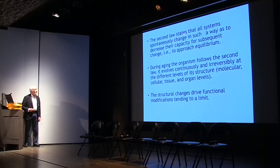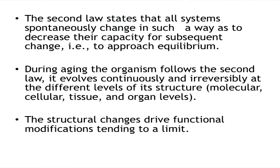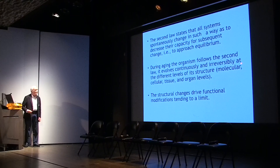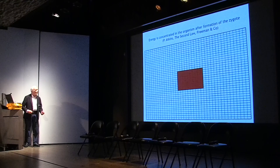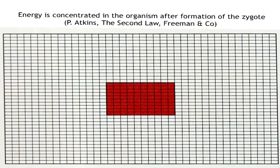The second law states that all systems spontaneously change in such a way as to decrease their capacity for subsequent change — that is, to approach equilibrium. During aging, the organism follows the second law. It evolves continuously and irreversibly at the different levels of its structure: molecular, cellular, tissue, and organ level. The structural changes drive functional modifications, tending to a limit. In terms of energy, I use a schematic representation from Peter Atkins in his book, The Second Law.